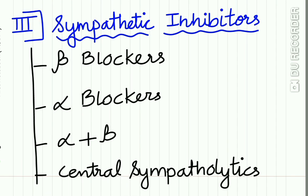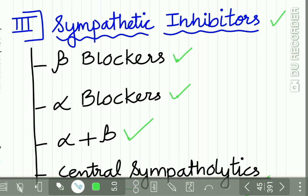The third group is sympathetic inhibitors, which include beta blockers, alpha blockers, alpha plus beta blockers, and central sympatholytics. These have been studied in detail in our lecture on anti-adrenergic drugs.